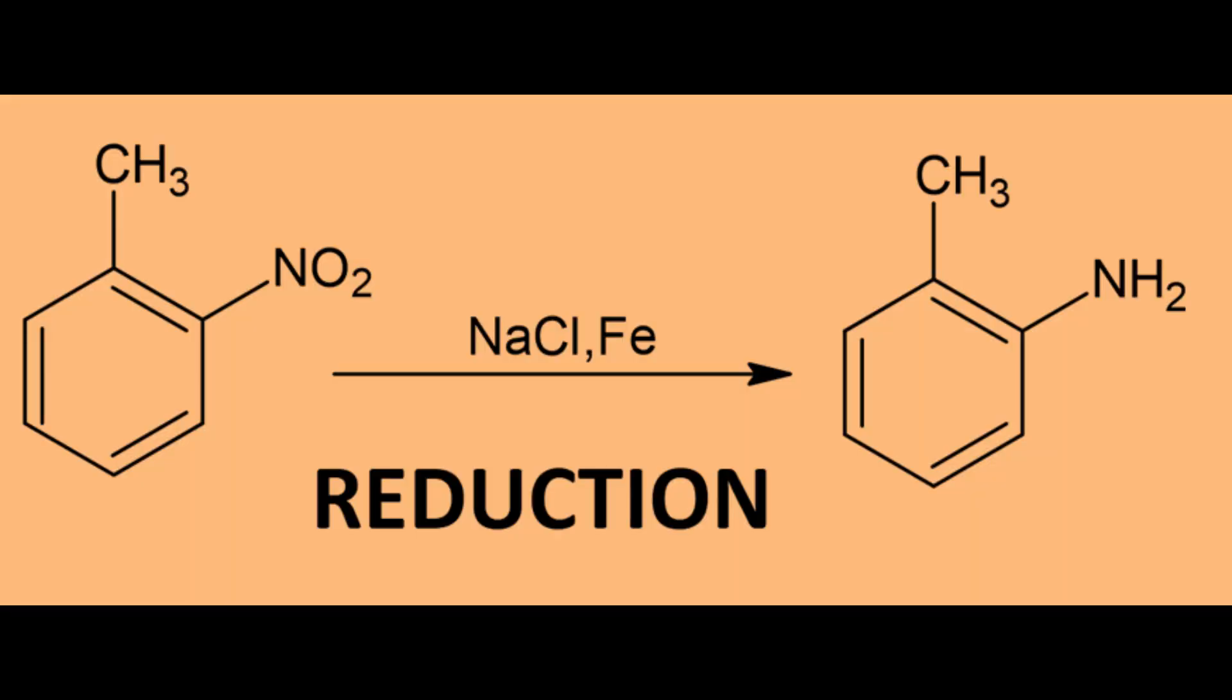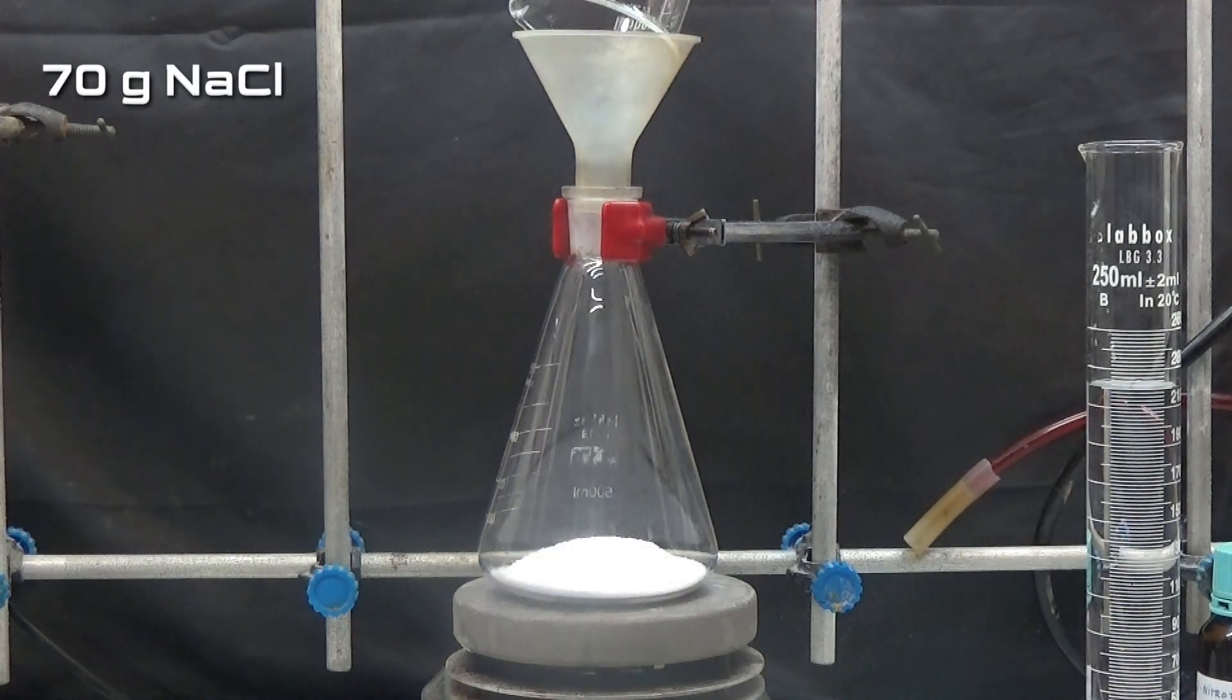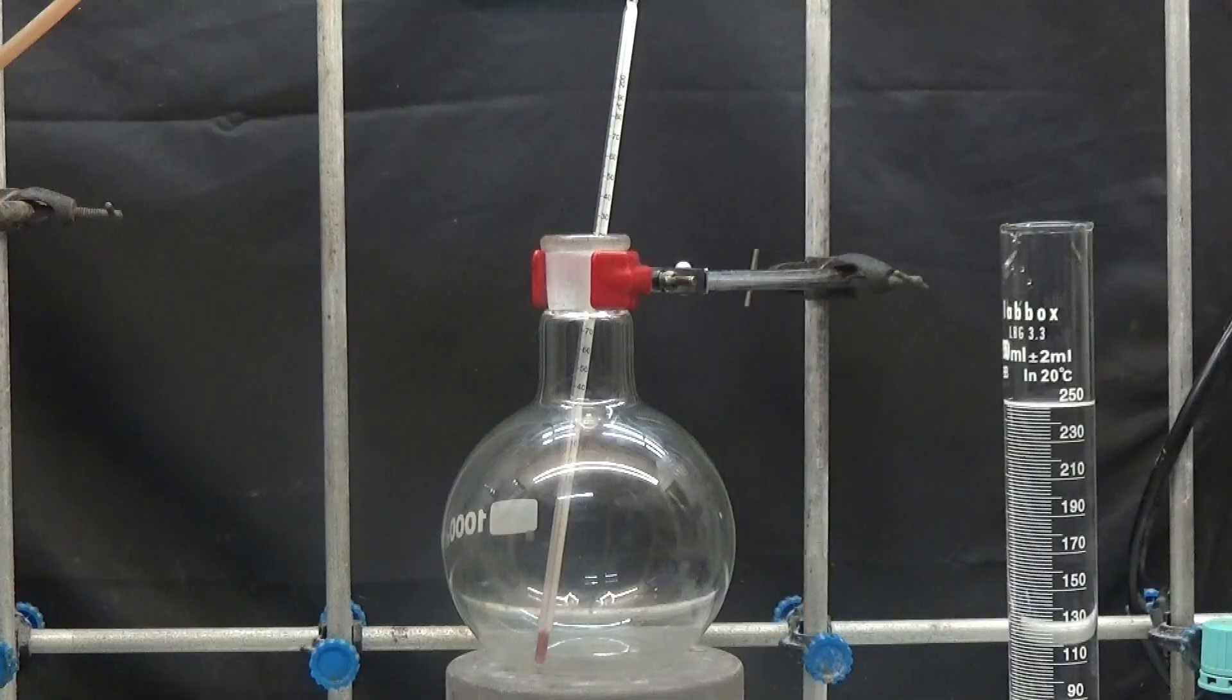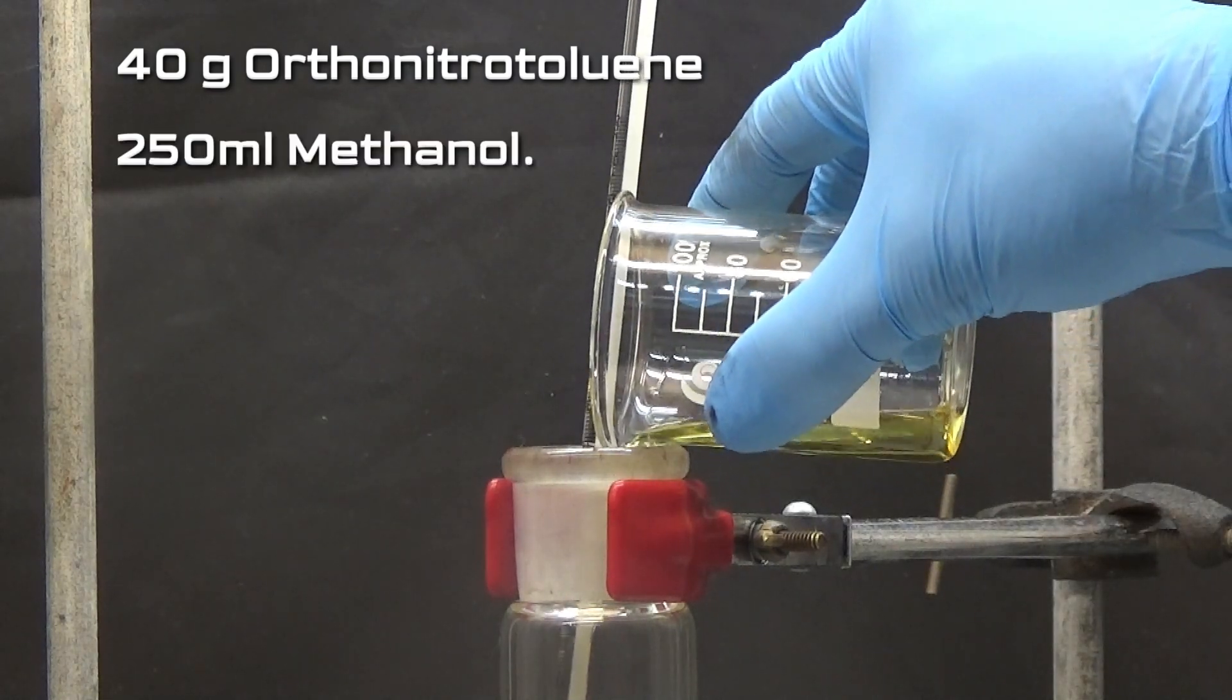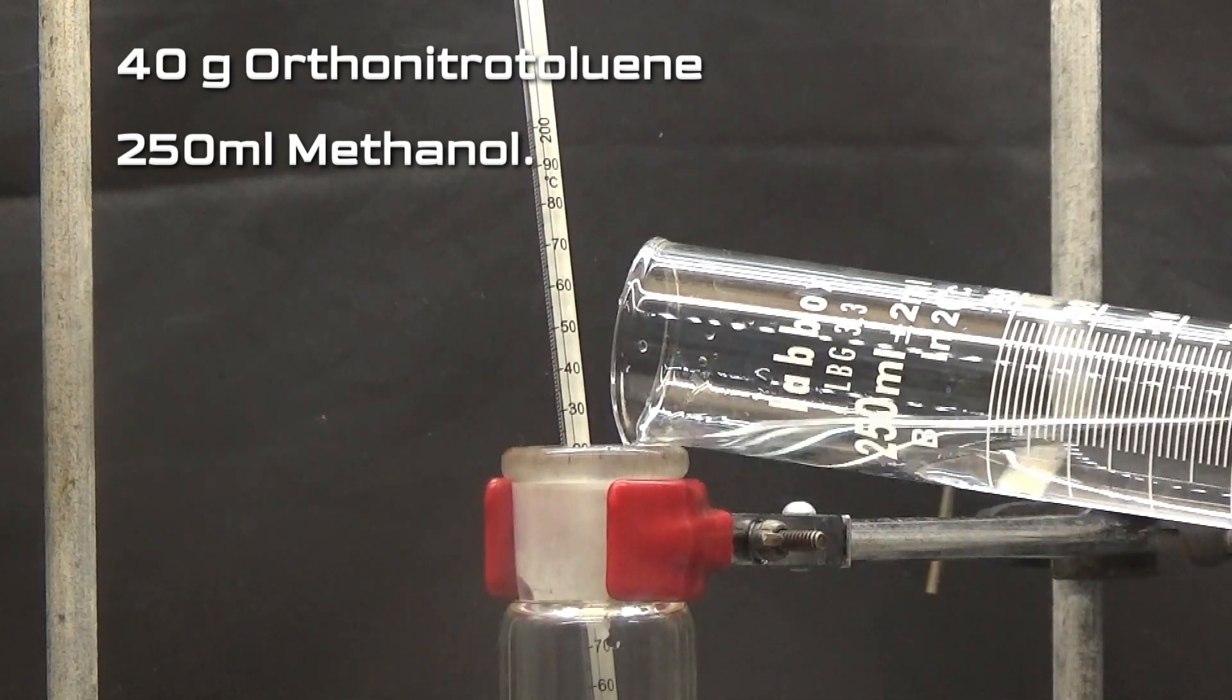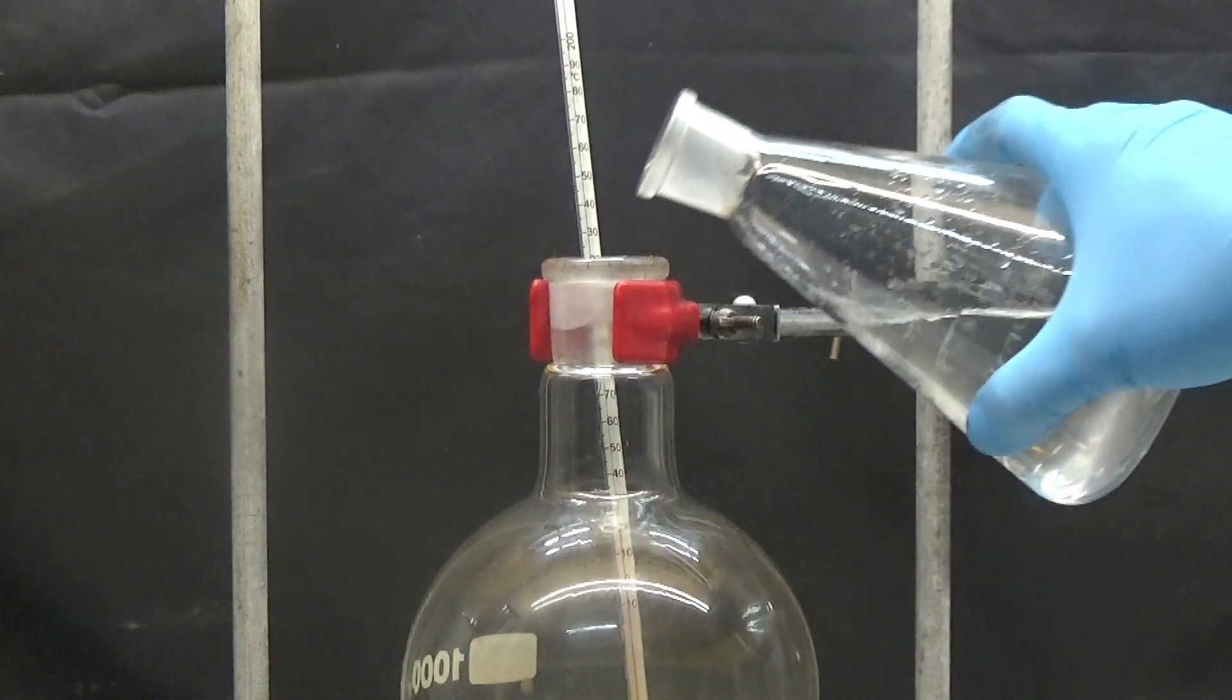The next operation is to reduce the nitro group to amine. To obtain toluidine we are going to reduce the nitro group with iron metal in a sodium chloride solution. The first step is to prepare a solution of 70 grams of sodium chloride in 220 milliliters of water. In a 1000 milliliters flask we put 40 grams of orthonitrotoluene and dilute it with 250 milliliters of methanol. Add the sodium chloride solution.